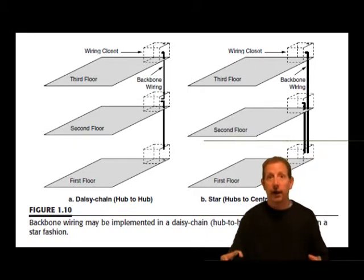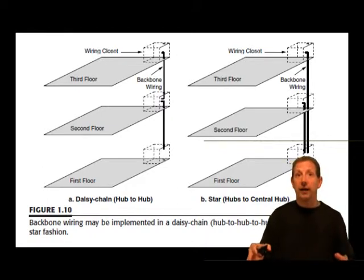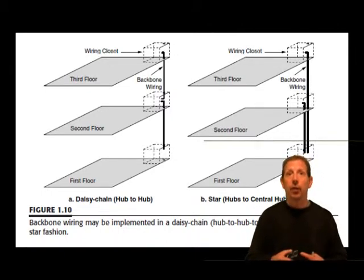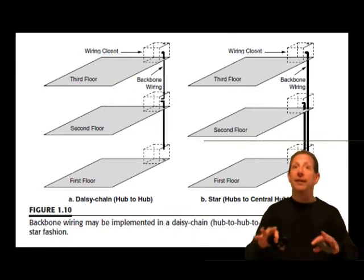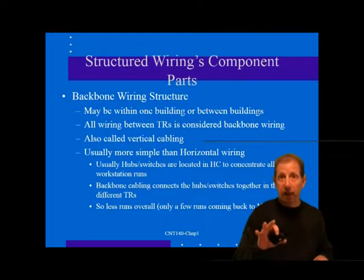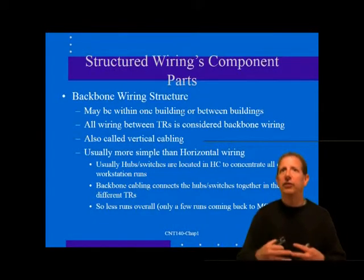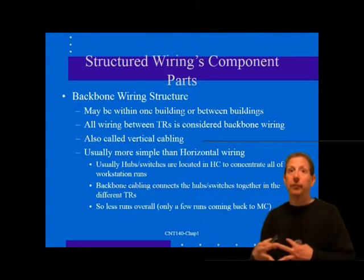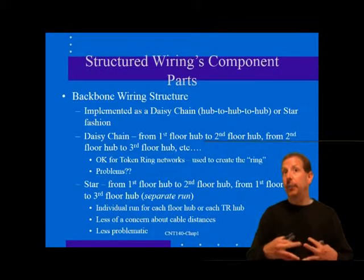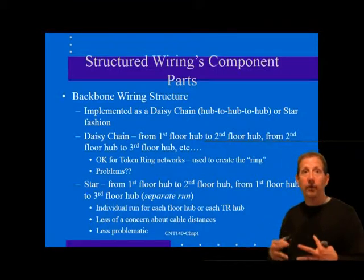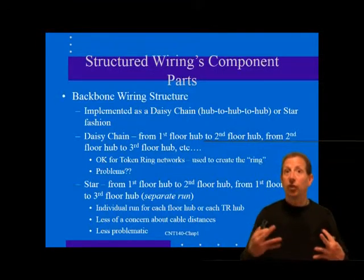Some standards refer to backbone wiring as vertical wiring in contrast to horizontal wiring. Backbone wiring is usually simpler than horizontal cable. It is customary to place LAN hubs or concentrators in each TR to connect all workstation wires served by that TR, with backbone wiring connecting the hubs one to another. Backbone wiring may be implemented in a daisy-chain hub fashion or in a star fashion. In a network topology such as Ethernet that must guard against too many repeater jumps, the star connection is preferred.